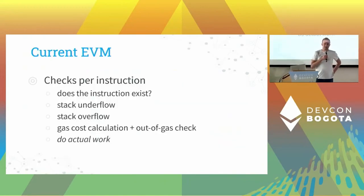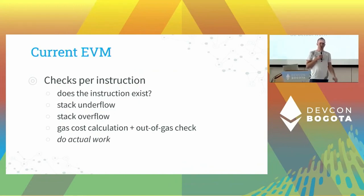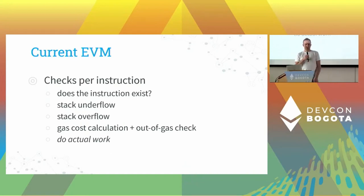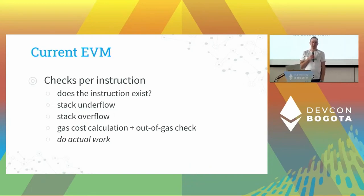One of the inefficient aspects of the EVM is that you need to do a lot of work on top of what the instructions are actually doing internally. These are checks that every step in the interpreter needs to perform to make sure the EVM works as the specification requires.